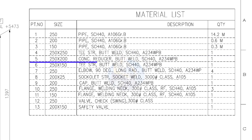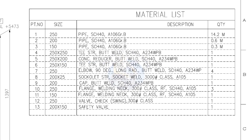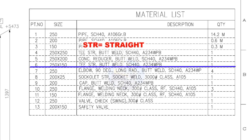Item number 5: 250 into 200, concentric reducer, butt welded, schedule 40. Quantity is 1. Item number 6: 250 into 150, straight T, butt welded, schedule 40. Quantity: 1.